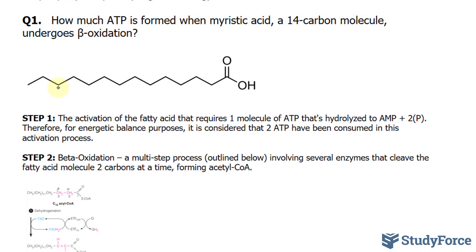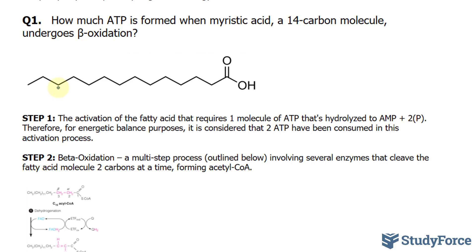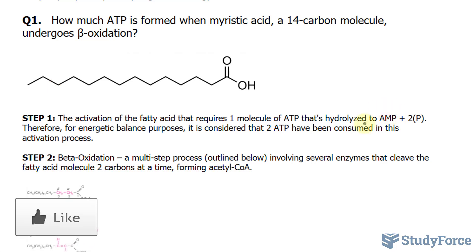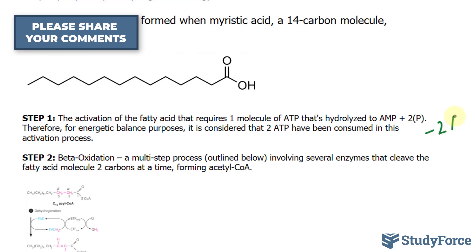The first step in beta-oxidation is to activate the fatty acid, and this requires one molecule of ATP. This molecule is hydrolyzed to AMP plus two phosphates. As a result of ATP going to AMP and two phosphates, for energy balance purposes, it's considered that two ATPs are consumed in this process. So right from the get-go, there's an investment of two ATP molecules.